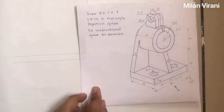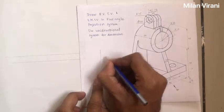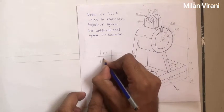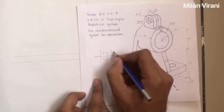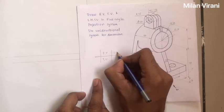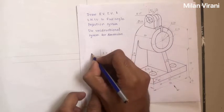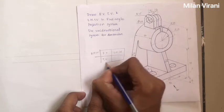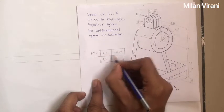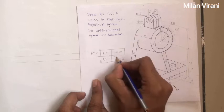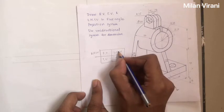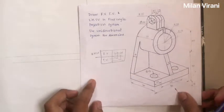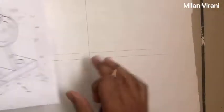For the first angle method, here will be the front view, then below front view it is top view, right side it is left hand side view and left side it is right hand side view. We will use this 4-quadrant layout: front view, top view, left hand side view, and over here it will be projections from top view to left hand side view.